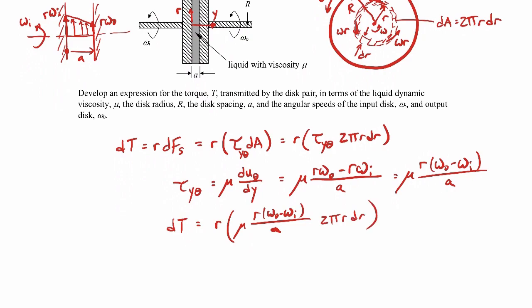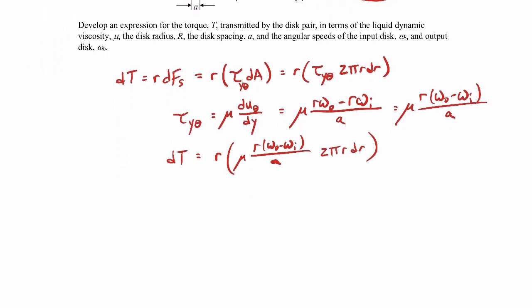So that shear stress times the area 2 pi r dr. By the way, the angular velocities, one of these is going to be larger than the other, and we won't worry about the sign. We know we're asked to find the magnitude of the torque, so whatever the sign comes out to be, just take the absolute value.